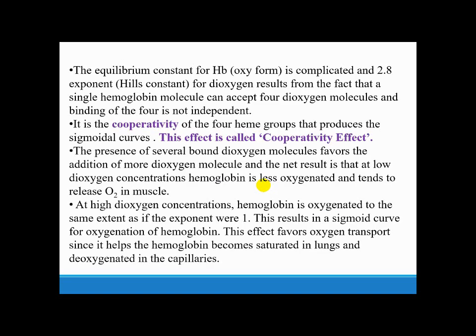The equilibrium constant for hemoglobin oxyform is complicated at 2.8 exponent, Hill constant for dioxygen. This results from the fact that a single hemoglobin molecule can accept four dioxygen molecules and binding of the four is not independent. It is the cooperativity of the four heme groups that produces the sigmoidal curve. This effect is called cooperativity effect. The presence of several bound dioxygen molecules favors the addition of more dioxygen molecules. The net result is that at low dioxygen concentration, hemoglobin is less oxygenated and tends to release O2 in muscles.